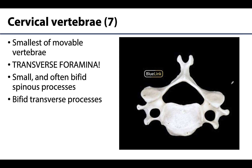Let's turn our attention to how we are going to differentiate between these movable vertebrae, starting with the most superior: the cervical vertebrae, of which there are seven. By far the easiest way to tell you are looking at a cervical vertebra is if you see these relatively large transverse foramina — not the vertebral foramen, but these transverse foramina on either side of the body in the relatively small transverse process of the cervical vertebrae. When you see that, you know you're looking at cervical.